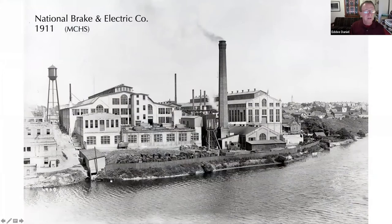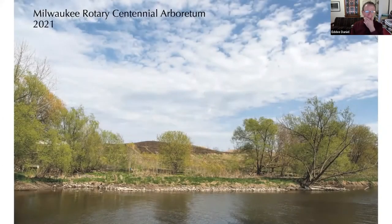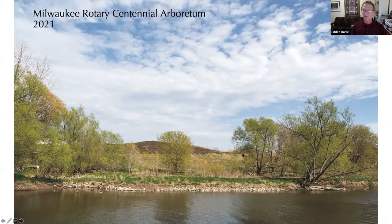Most of you have probably been to the Urban Ecology Center at Riverside Park and walked out to the arboretum. It surprises most people to learn that that beautiful space used to look very different — this is the factory that was on the land that now looks like the arboretum. The hill here is brown because I took this picture just after the Urban Ecology Center conducted a burn of the prairie grasses. This is looking across from Gordon Park to the arboretum; the Urban Ecology Center is over the hill behind.